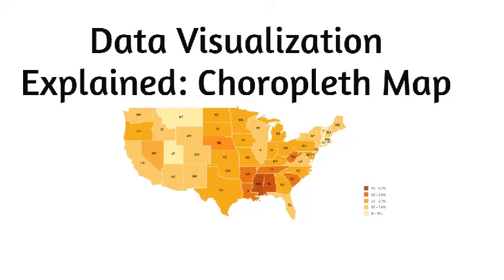Choropleth maps display divided geographical areas or regions that are colored, shaded or patterned in relation to a data variable. This provides a way to visualize values over a geographical area, which can show variation or patterns across the displayed location.